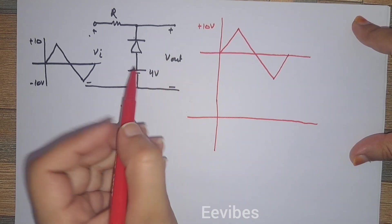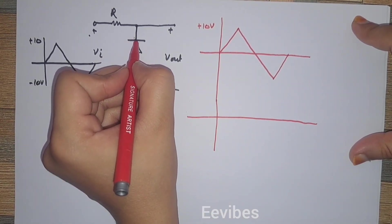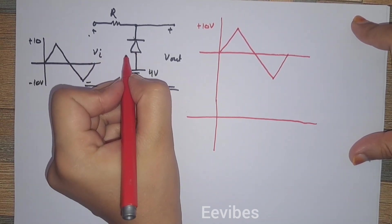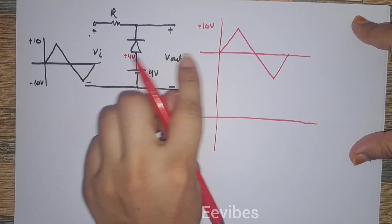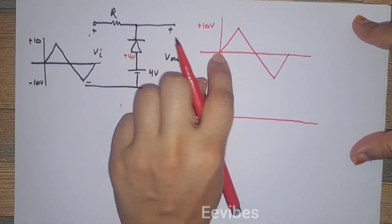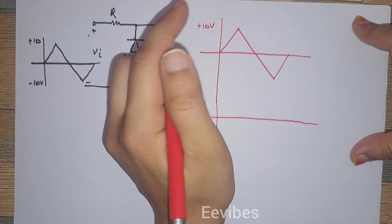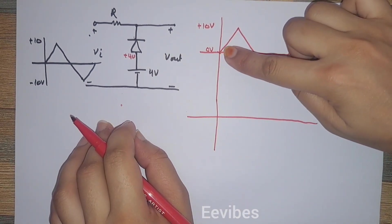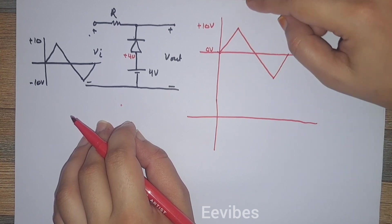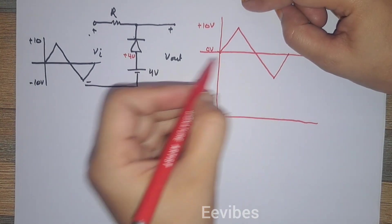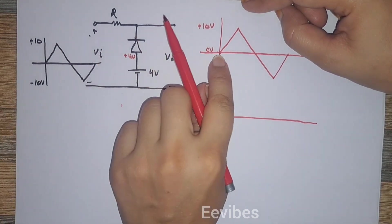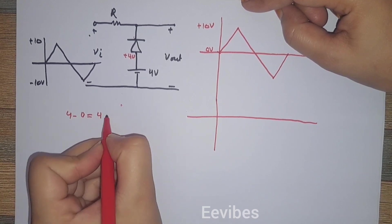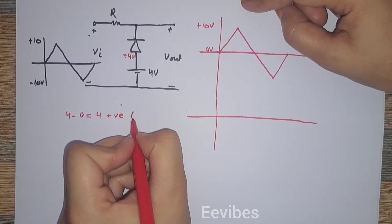Let's start the analysis by considering the potential at the anode and cathode terminals. The anode terminal is held at a fixed plus 4 volts, while the potential at the cathode starts at 0 volts and increases to 10 volts. As long as V-in is 0 volts, the anode-to-cathode potential is 4 minus 0 equals plus 4 volts — a positive value — so the diode will be forward biased.